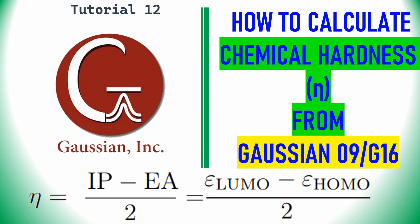This is a tutorial on Gaussian software. In this tutorial you can learn how to calculate chemical hardness, denoted as eta (η). The formula for chemical hardness is (IP - EA) / 2, where IP means ionization potential and EA means electron affinity. We can similarly also use LUMO and HOMO energies in order to calculate chemical hardness.